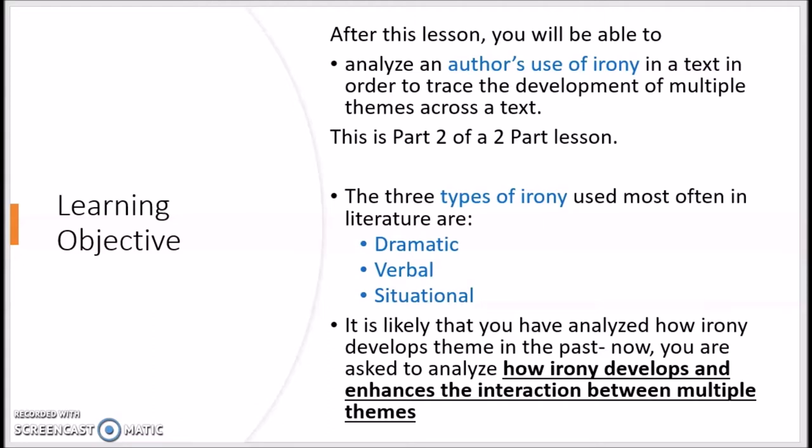These are skills that we've already been working on in previous lessons in isolation. For example, in a previous lesson you looked at how irony was developed at the end of A Soldier for the Crown. In a different lesson, you've looked at how multiple themes interact and develop over the course of the text. Today, we are going to put those two pieces of learning together to look at how irony develops and enhances the interaction between multiple themes.